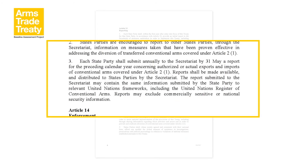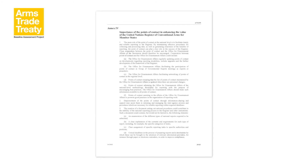Article 13, paragraph 3 of the ATT indicates that annual reports on imports and exports of international arms may contain the same information submitted by the state party to relevant United Nations frameworks, including the UN Register. The second source of guidance for this module is the UN Register. Annex 4 of the 2016 report of the Group of Governmental Experts on the continuing operation of the UN Register and its further development provides some key principles on points of contact that are relevant for the development of reporting processes.